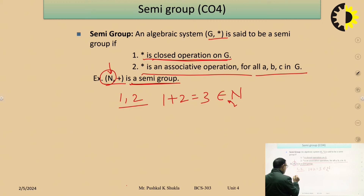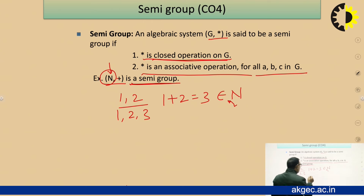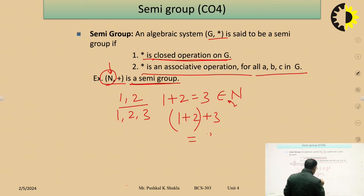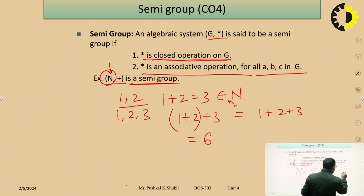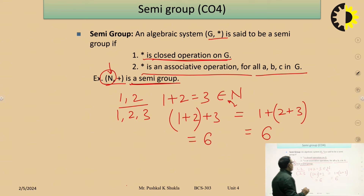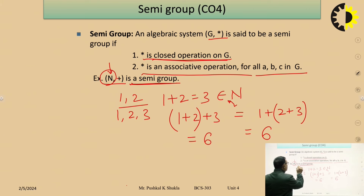We take three natural numbers 1, 2, and 3 and perform the associative operation on addition. So (1 + 2) + 3 = 6. We can also compute 1 + (2 + 3) = 1 + 5 = 6. In both cases the result is 6, so we can say the associative property holds, confirming (N, +) is a semi-group.